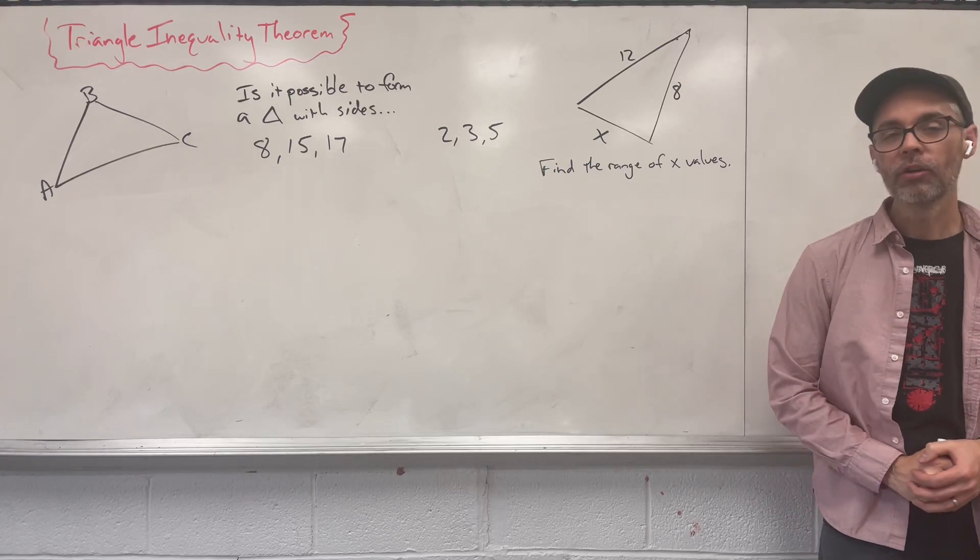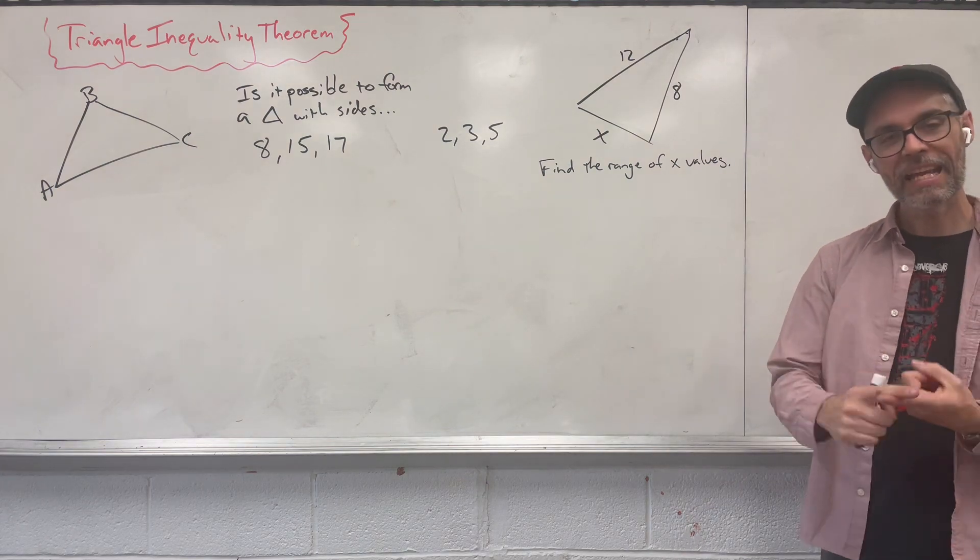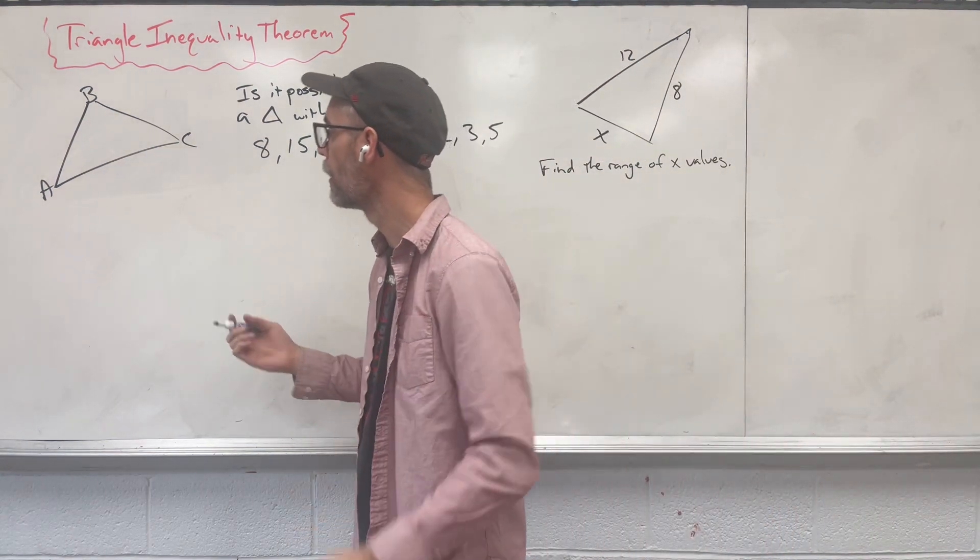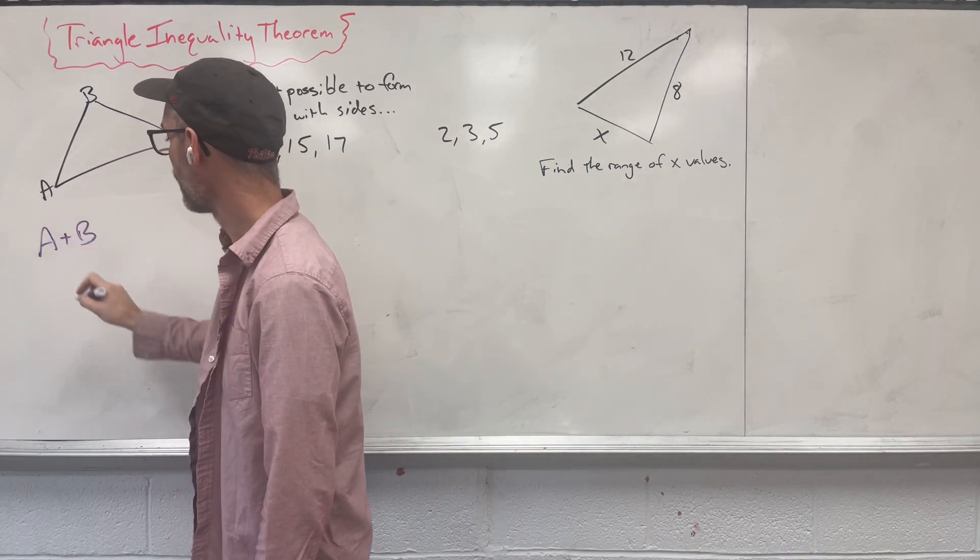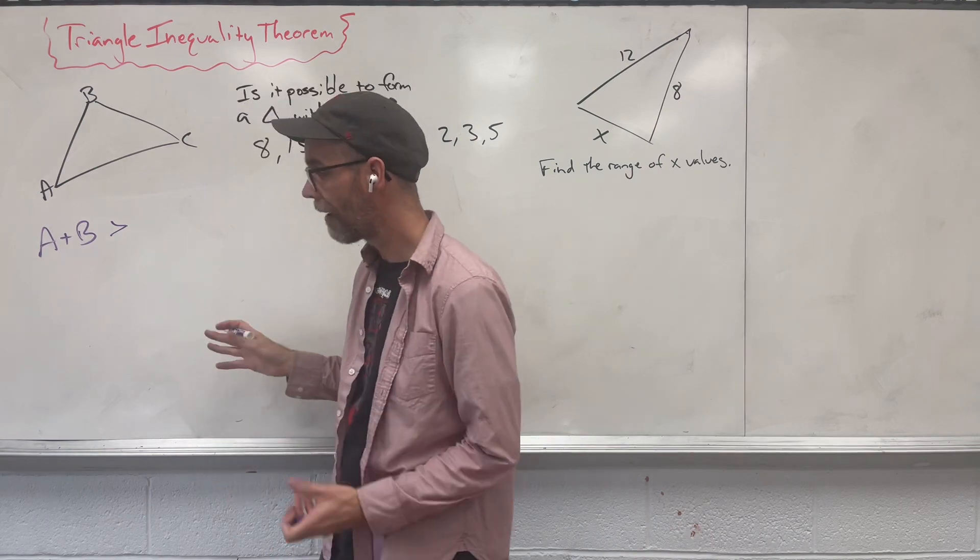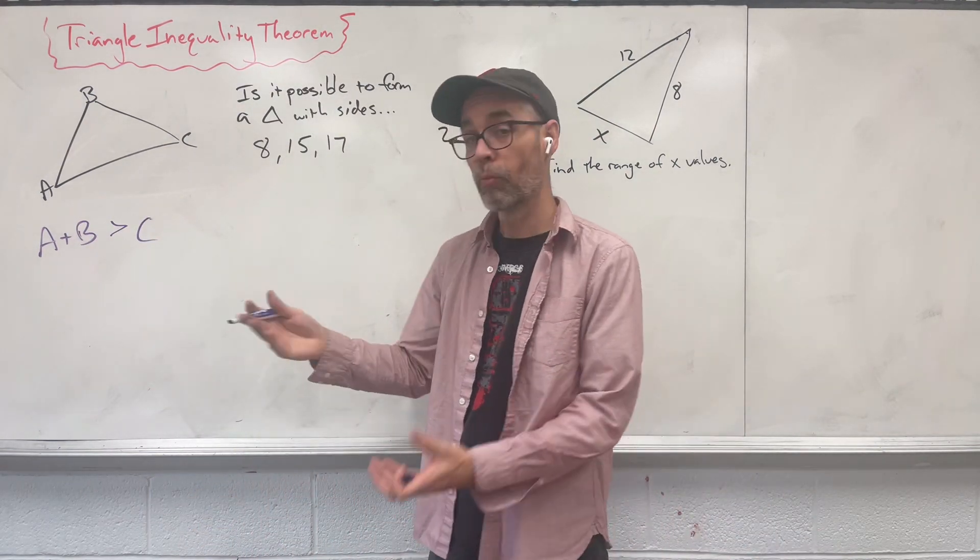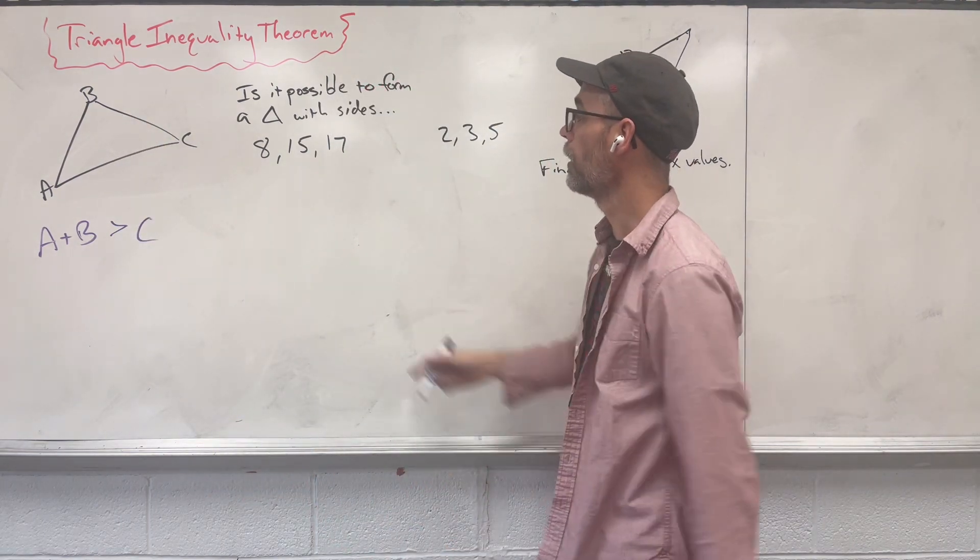Hi, today we're going to take a look at the triangle inequality theorem. The triangle inequality theorem says you take any two sides, add them up, and they have to be larger than your third side. So I could take A and B, add them up, and together they have to be bigger than side C. We're going to have to do that three times to find all of our combinations. Let's try it.